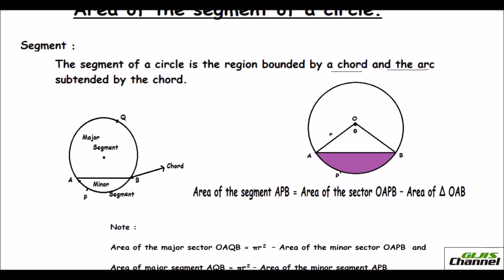You have one bigger portion on top and the smaller one at the bottom. The portion bounded by the chord and the smaller arc forms the minor segment, and the chord together with the major arc gives you the major segment.